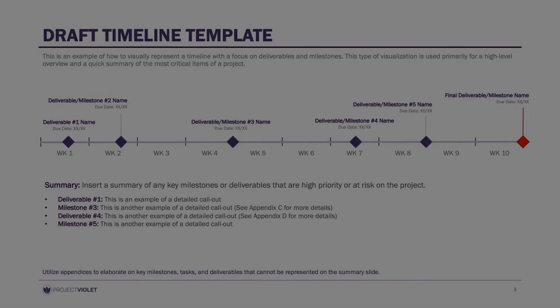The last thing that we want to talk about is how to visualize these plans in presentations. As you can see in this first template, it's very high-level and focuses primarily on the milestones and deliverables of the project. The top half of the slide highlights where the critical points of the project will fall, while the bottom provides some additional context to those critical deliverables and milestones.